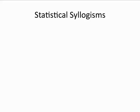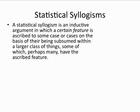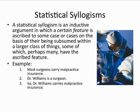We now come to our second form of inductive inference: namely, statistical syllogism. Remember that a syllogism is defined as an argument with three lines — two premises together with a conclusion. In a statistical syllogism, a certain feature is ascribed to someone or something because that same feature is found in the class to which the person or thing belongs. Here's an example: most surgeons carry malpractice insurance; Dr. Williams is a surgeon; conclusion: so Dr. Williams carries malpractice insurance.